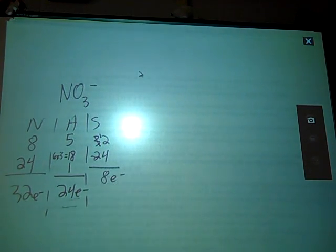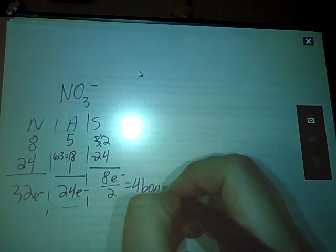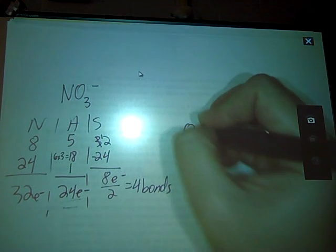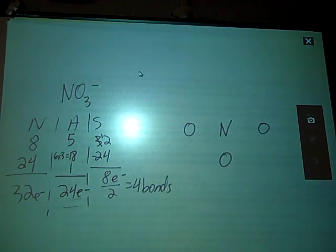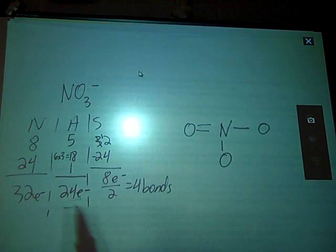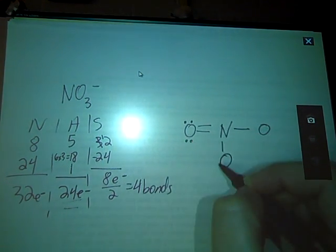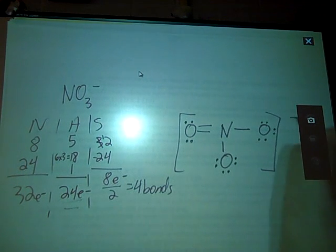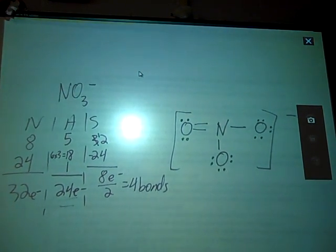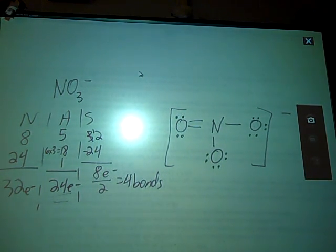Four bonds with three oxygens demonstrates resonance — the double bond can move around the structure. I place three single bonds and one double bond, choosing to put the double bond on the left. With 24 electrons total and 8 already placed as bonds, I add lone pairs to the oxygens: 10, 12, 14, 16, 18, 20, 22, 24 electrons present. All atoms have a full octet. Don't forget the minus charge on the outside bracket.